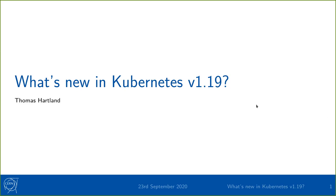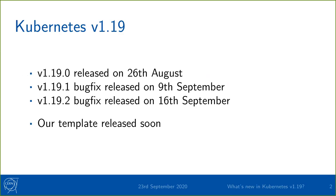Thanks for joining. I'm Thomas Hartland and this is what's new in Kubernetes version 1.19. 1.19 was first released about a month ago; there have been two bug fix releases since then, just small bugs, nothing major. Our cluster template for Kubernetes 1.19 will be released soon — we're still making some patches in Magnum to fully support Kubernetes 1.19.